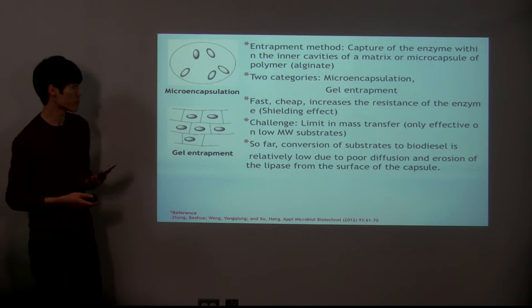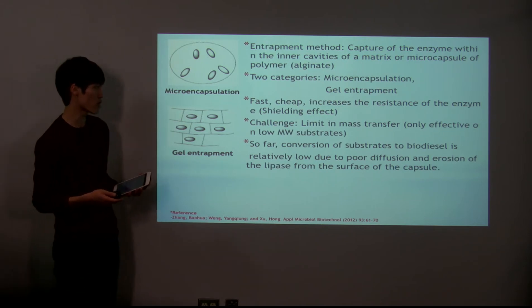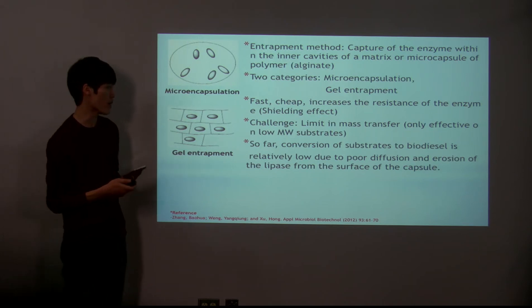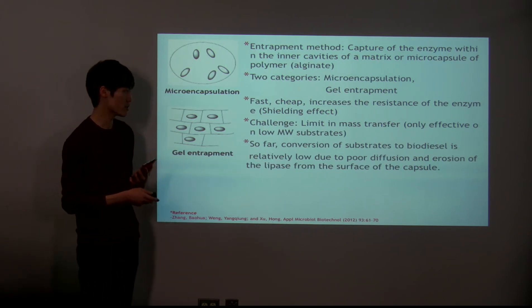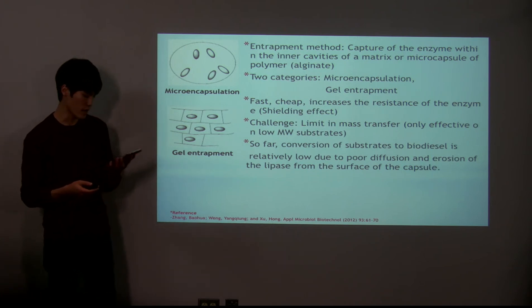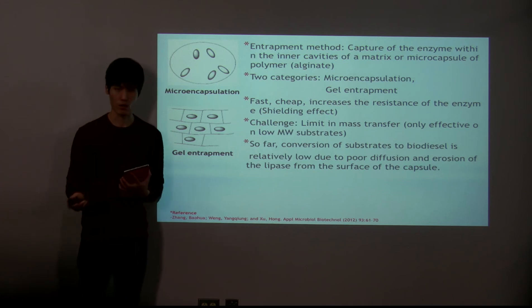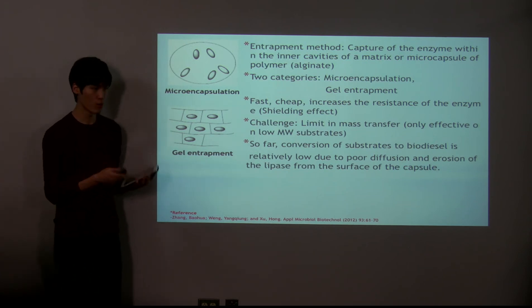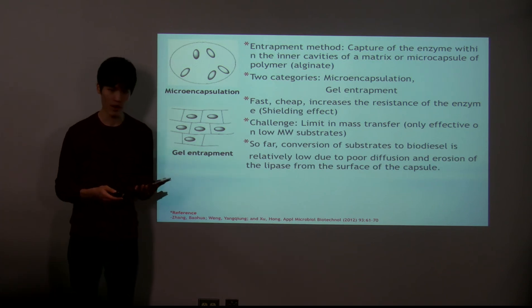The last method is the entrapment method. Entrapment is the capture of an enzyme within the inner cavities of a matrix or microcapsule of a polymer such as alginate. There are two broad categories: microencapsulation and gel entrapment. The method is fast and cheap and can enhance the resistance of the enzyme through the shielding effect of the capsule and gel. The challenge is a limit in mass transfer of the substrate — only substrates with low molecular weight are able to transfer inside the gel and contact the enzyme. When used solely, conversion of substrate to biodiesel is relatively low due to poor diffusion and erosion of the enzyme from the surface of the capsule, and efforts are ongoing to find better capsule substances.